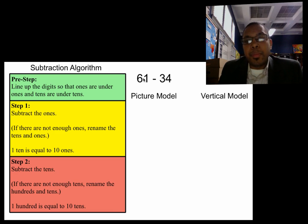Let's look at the problem. The problem is asking us to subtract sixty-one minus thirty-four. In a subtraction problem, the first number that you see is the whole. This number right here, the thirty-four, is the part. So we're being asked to subtract thirty-four from sixty-one.